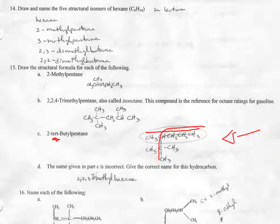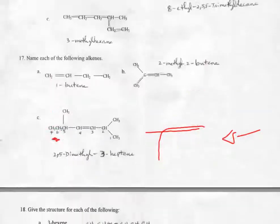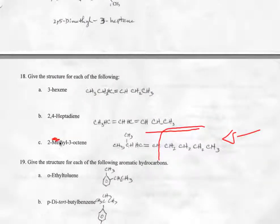18B - let me look at that one. 2,4-heptadiene. Same thing - after the second and the fourth carbon there are double bonds. Diene means two double bonds. So after the second one, after the fourth one, two double bonds. That's 18B.